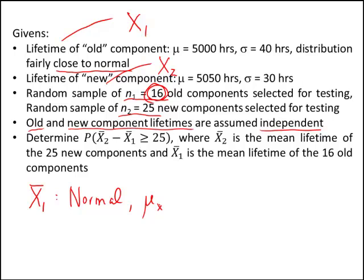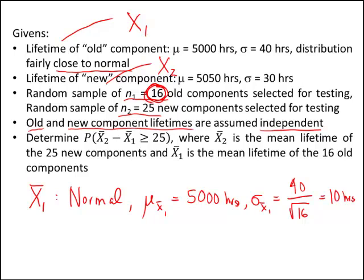The mean of X-bar₁ is going to be the mean of the original lifetime of the old component, which is 5,000 hours. The standard deviation of X-bar₁ is going to be the old standard deviation divided by the square root of the sample size: 40 divided by √16 equals 40 divided by 4, which is 10 hours. So the distribution of X-bar₁ is normal with mean 5,000 hours and standard deviation 10 hours.